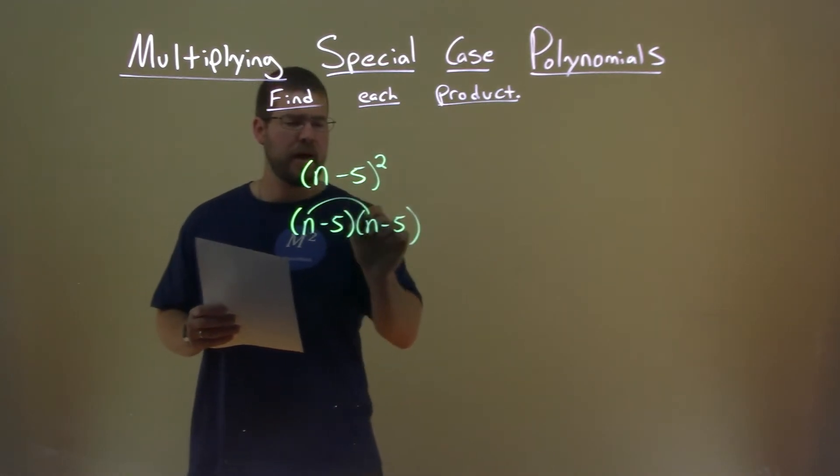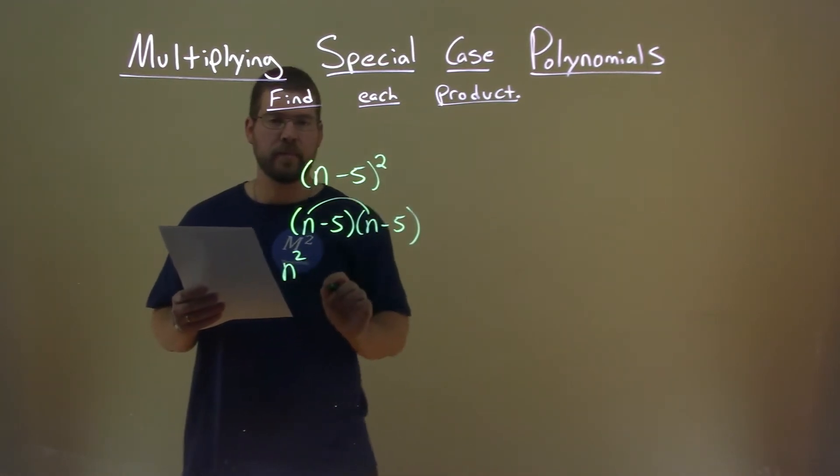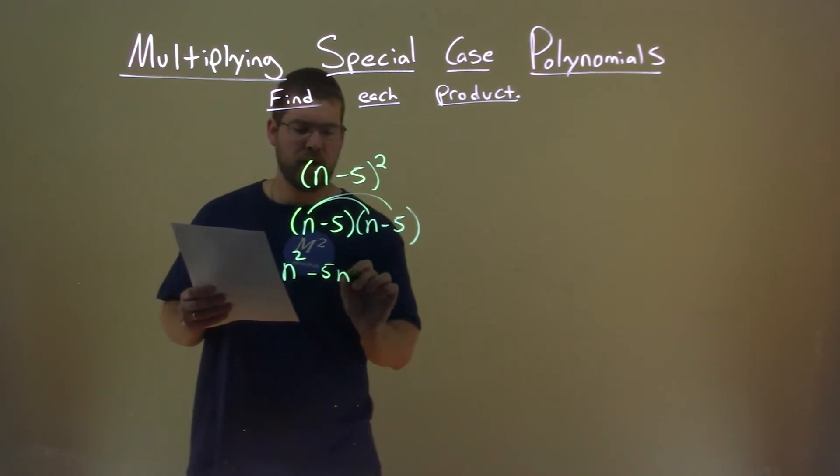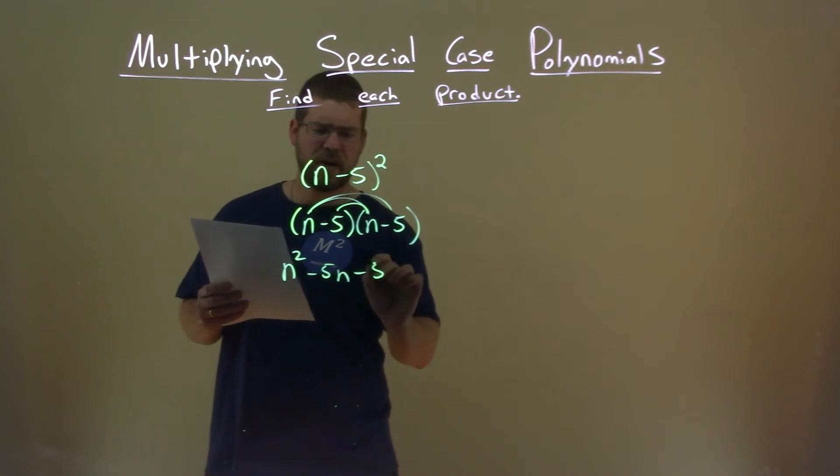Now let's multiply it. n times n, n squared. n times a minus 5 is a minus 5n. Negative 5 times n is a minus 5n again.